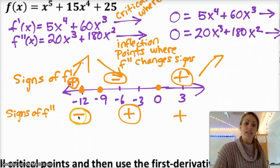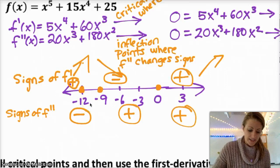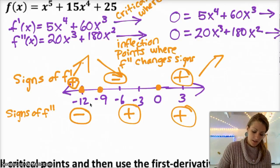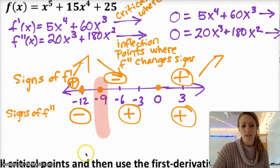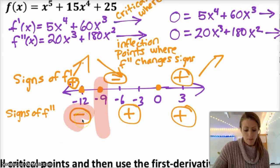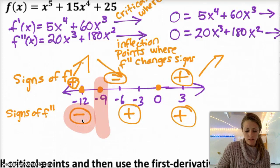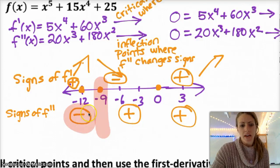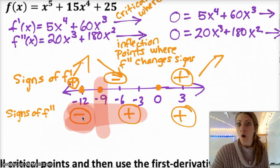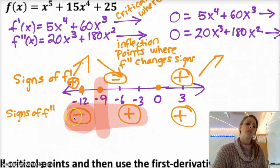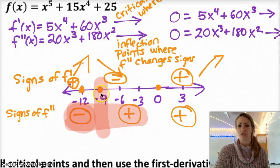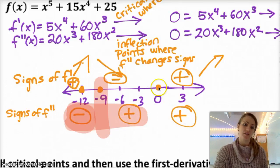Because at negative 9 the second derivative changes from negative to positive, that means negative 9 is an inflection point. But at 0, the sign doesn't change — it goes from positive to positive — so 0 is not an inflection point.